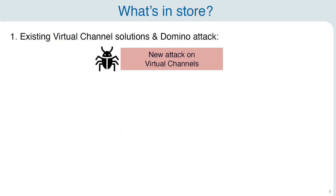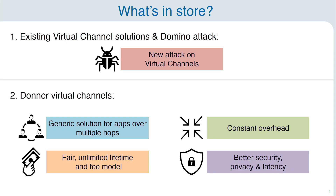Let me quickly outline what's in store for this talk. First I'm going to talk about existing virtual channel constructions and the new attack that we find on them. Then I'm going to present Donna, which is a new virtual channel construction that is secure against this attack but also has some other nice features. For instance, it provides a generic solution for hosting apps over multiple hops and payment channel networks. It provides fair unlimited lifetime and fee model, only has a constant overhead, and it provides better security, privacy, and latency.